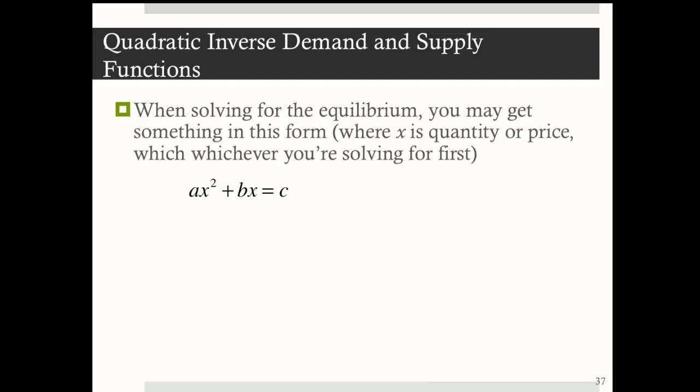Quadratic equations can be a little more complicated. When solving for equilibrium, you may get something in the form ax² + bx = c, where x is quantity or price, whichever variable you're solving for first. But you can rearrange it to ax² + bx - c = 0. These two equations are identical.